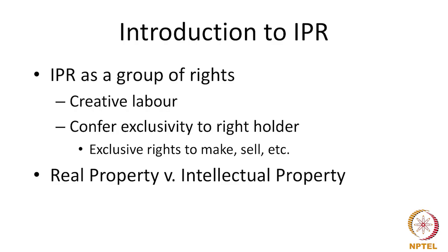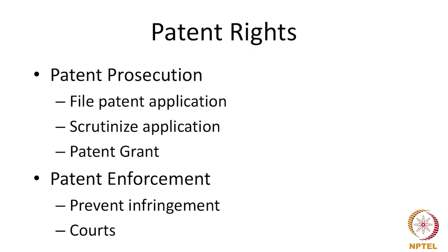There are certain rights which do not require any registration, whereas other rights are created — for instance, a patent right is created and carved out by distinguishing the invention from what had gone before. In the case of patent rights, you need to go through a process of registration. The process starts with a person filing a patent application before the patent office, which scrutinizes the application for certain checks, and later on grants a granted patent. The process from a formal application to a grant is what we call patent prosecution.